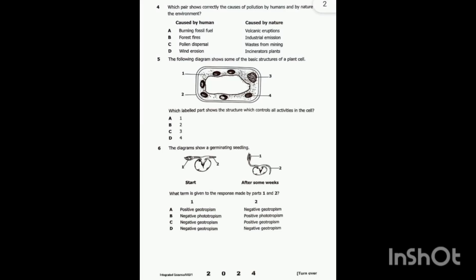Let's look at question number four: which pair shows correctly the causes of pollution by humans and by nature to the environment? They want us to identify the cause of pollution by humans and by nature — caused by human and caused by nature.